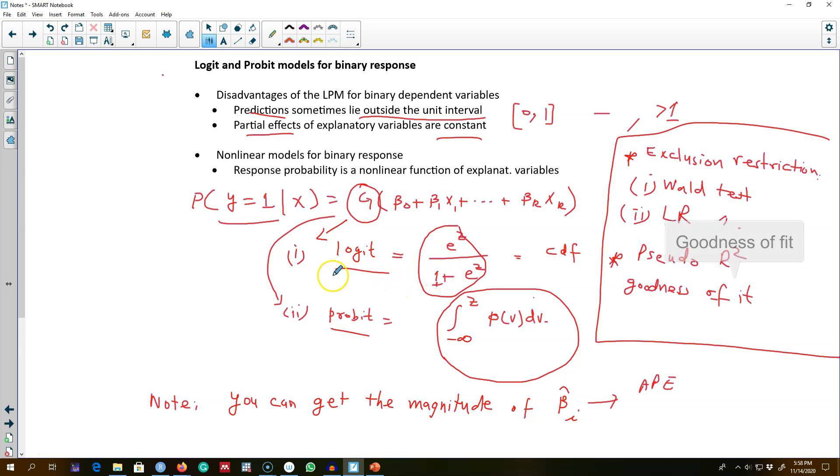Here is what we do while estimating logit or probit model. First, we estimate a logit or probit model and get the direction and statistical significance of the relationship between X and Y. Then we calculate average partial effects to get the magnitude.